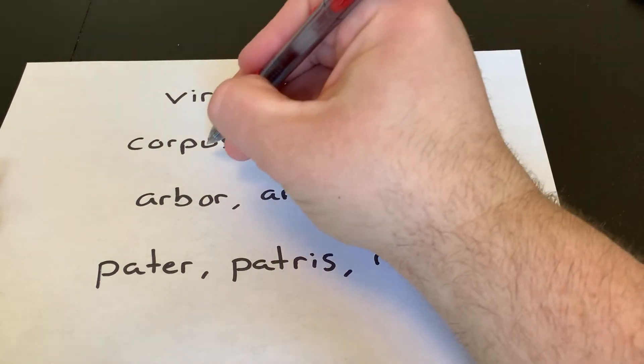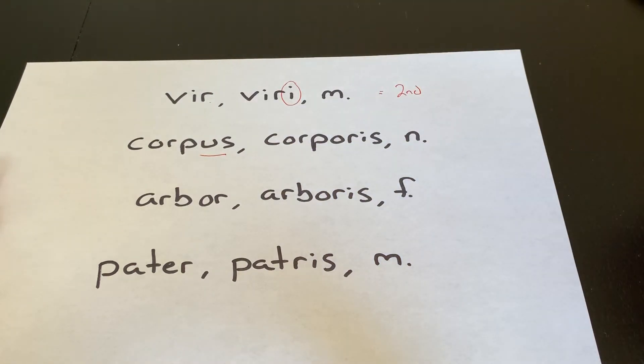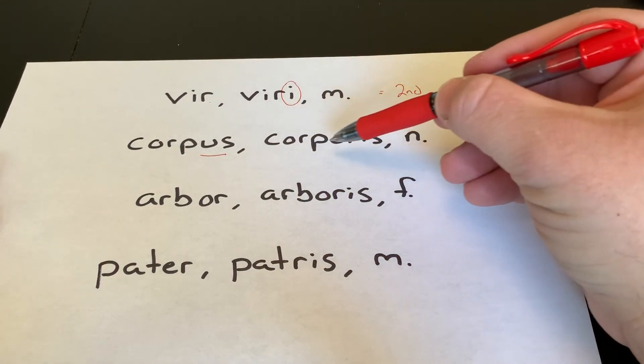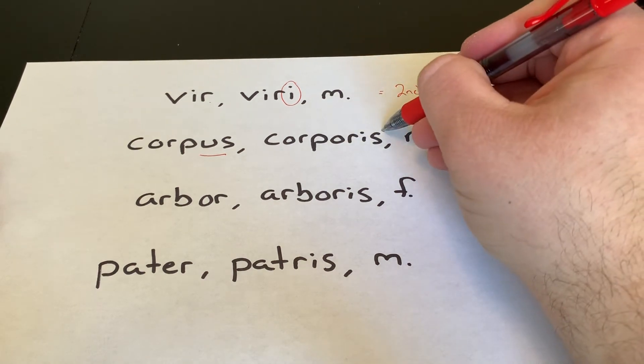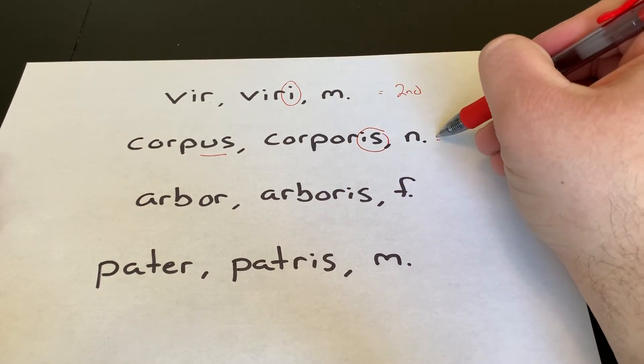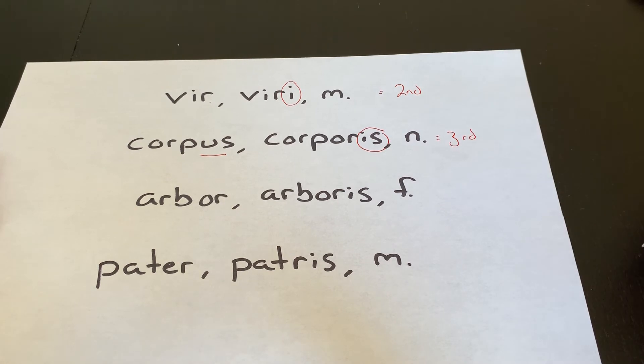You might also have a word that ends in US and really looks like a second declension masculine word. But then if you look at the genitive here, you see an IS and that tells you it's third declension.